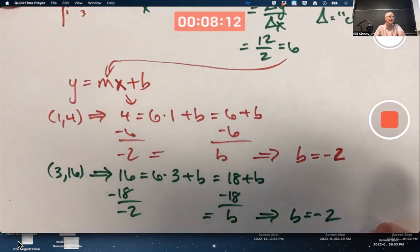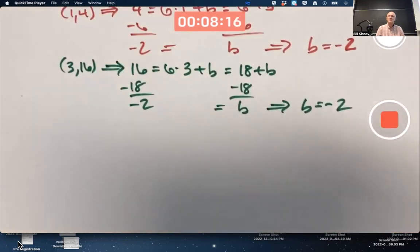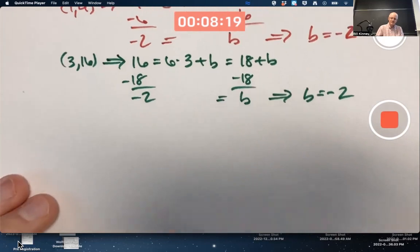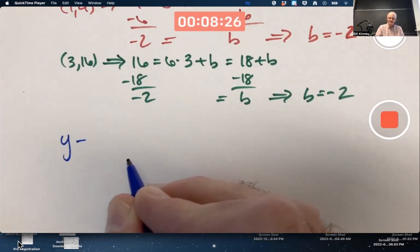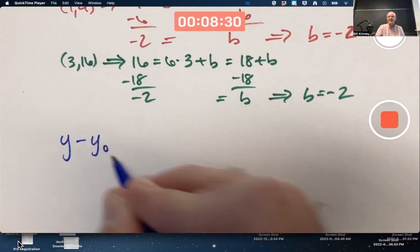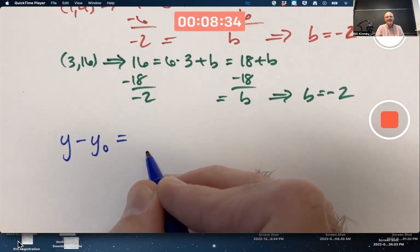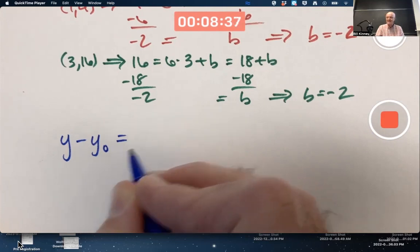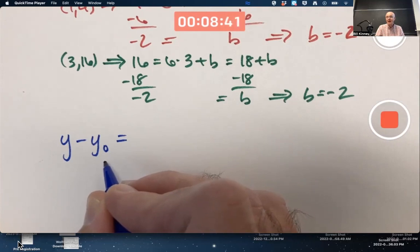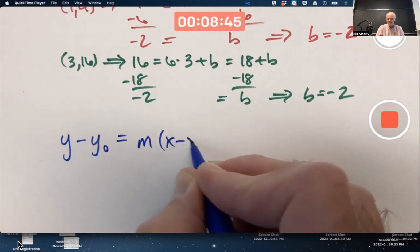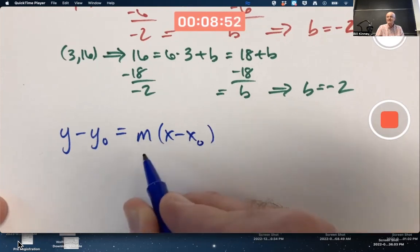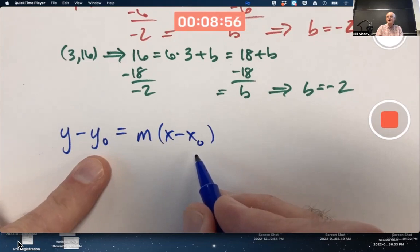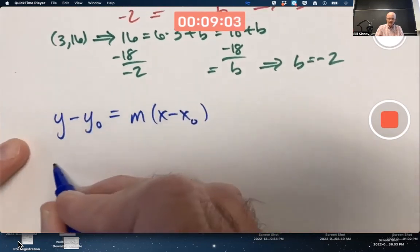You may also have solved this in another way using what's called point slope form. Y minus, should I call it y0 or y1? It doesn't matter. I like using 0 to tell you the truth. Equals the slope times x minus x0. m is the slope. x0 comma y0 are the coordinates of a specific point. And again, it doesn't matter which point you use.